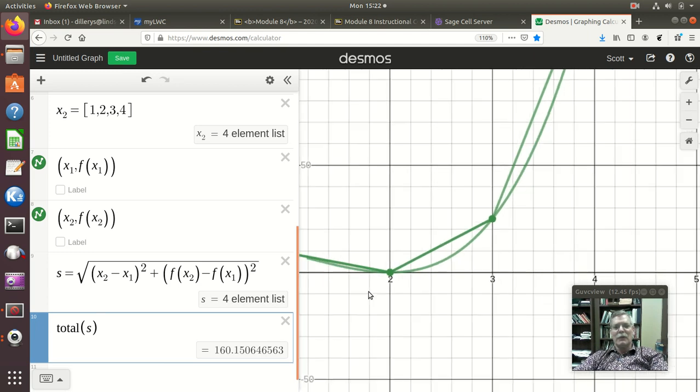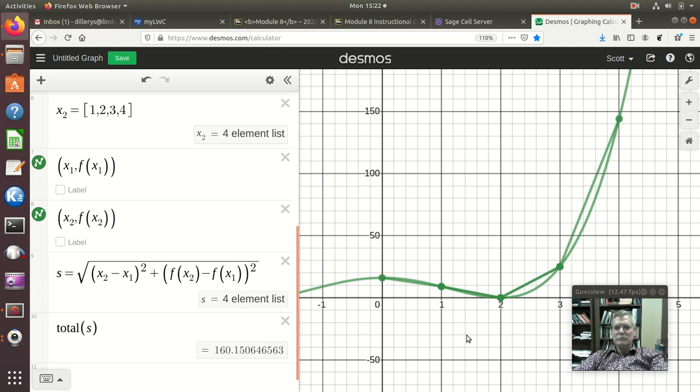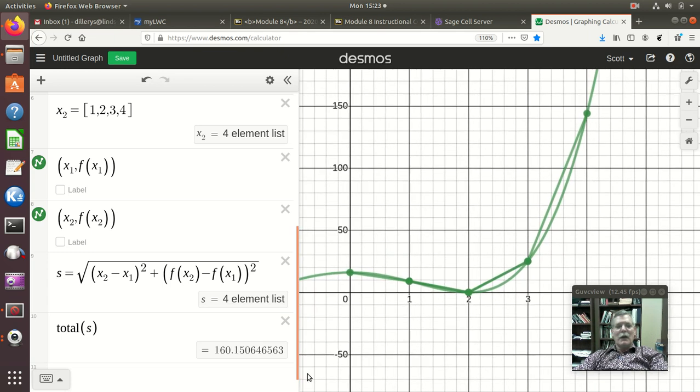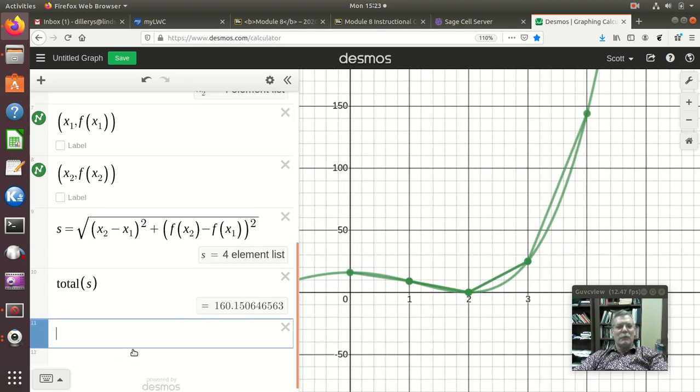And, so, we can now do our total of S and that's the 160. So, that was really a very good estimate of this thing. And, then, finally, it wanted the midpoint rule.